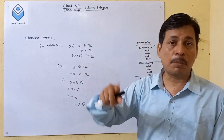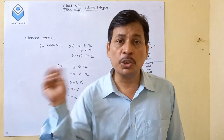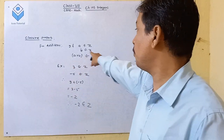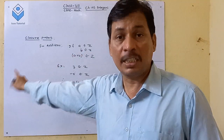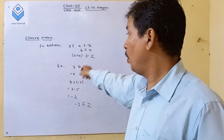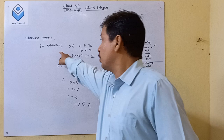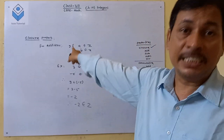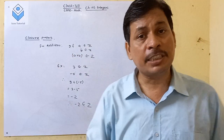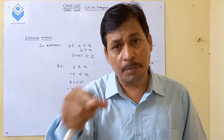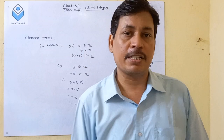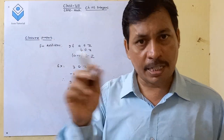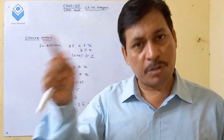This is the closure property of integers for addition. If A is an integer and B is an integer, then A plus B is also an integer.